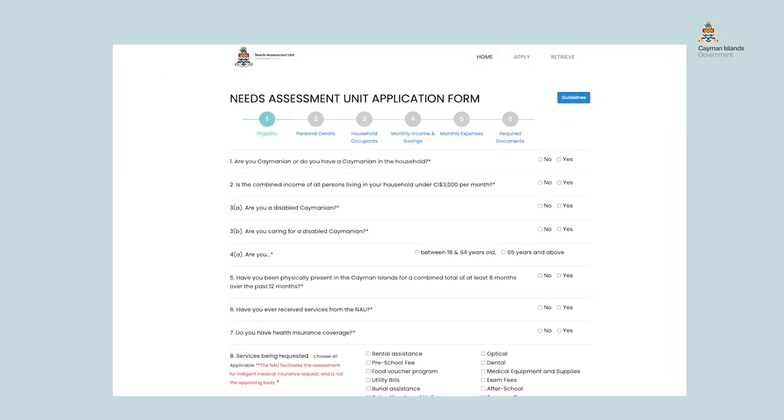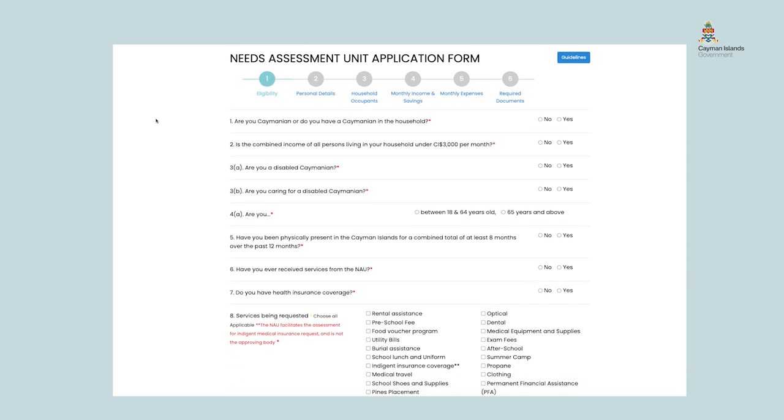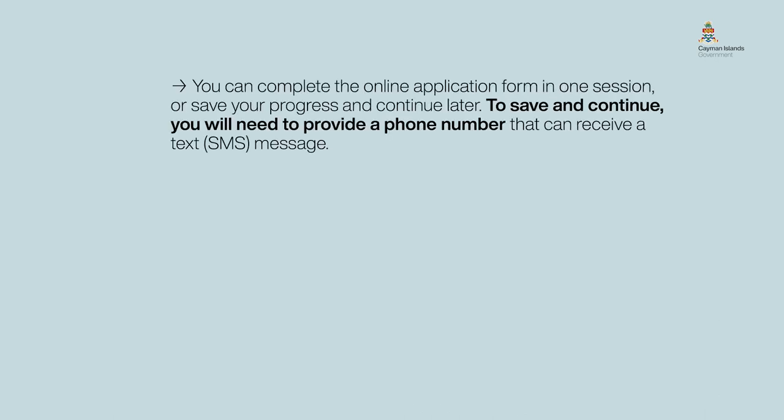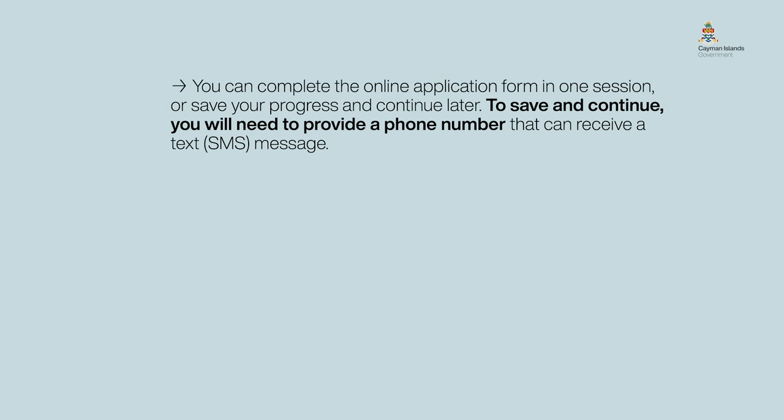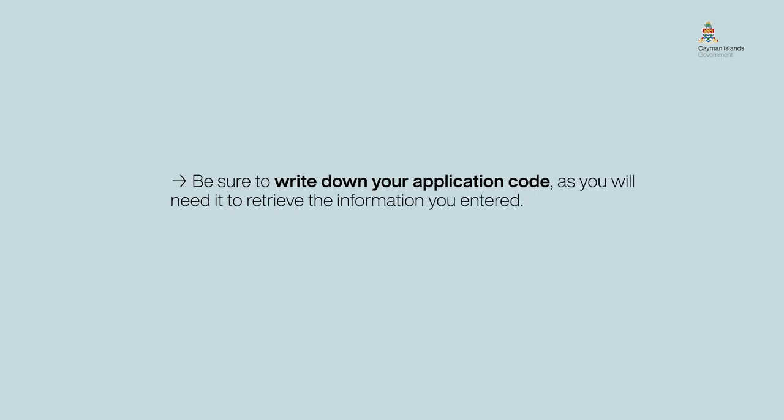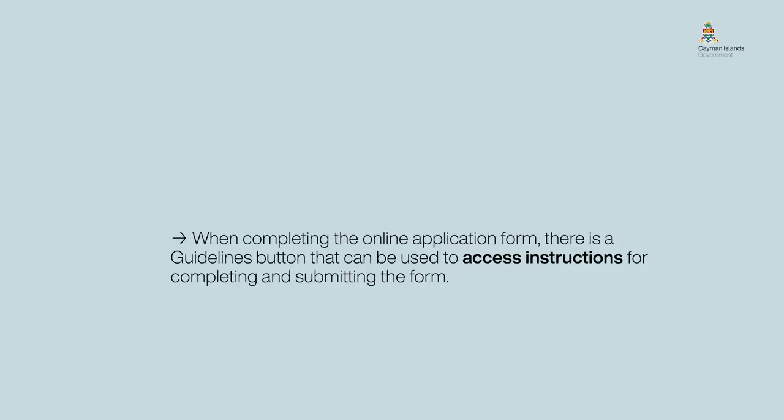When completing the application form, there are other important points to note. You can complete the online application form in one session or save your progress and continue later. To save and continue, you will need to provide a phone number that can receive a text SMS message. Be sure to write down your application code as you will need it to retrieve the information you entered. There is also a guidelines button that can be used to access instructions for completing and submitting the form.